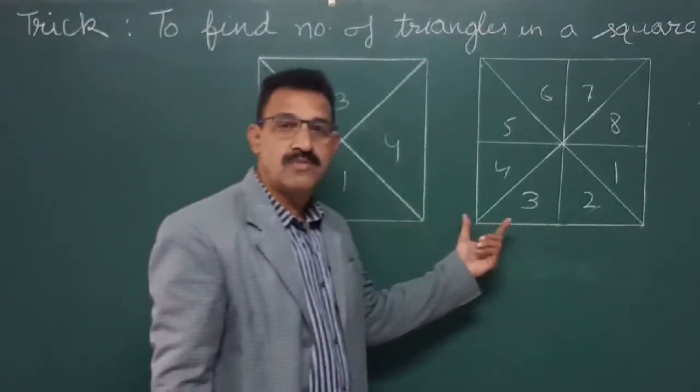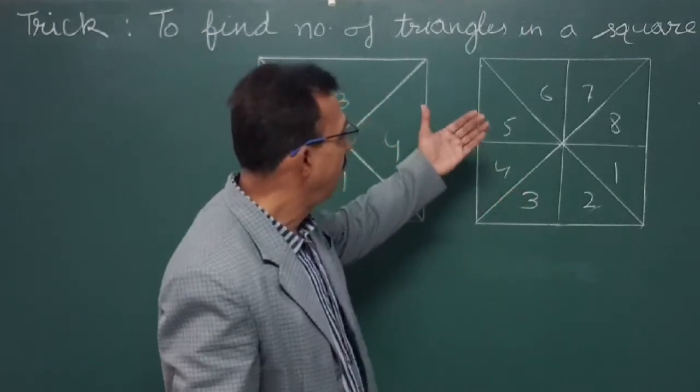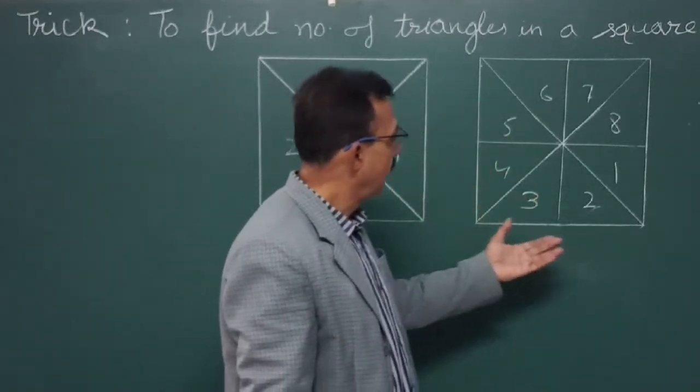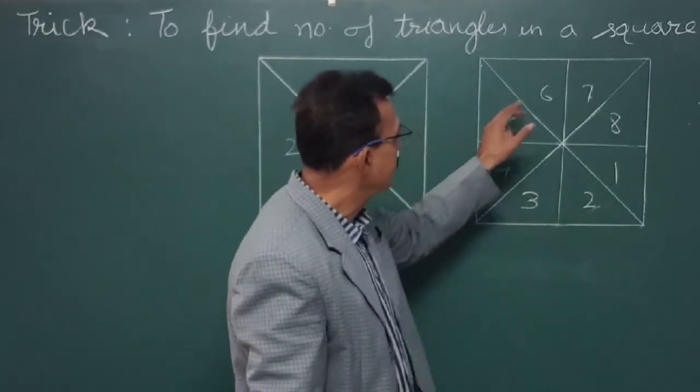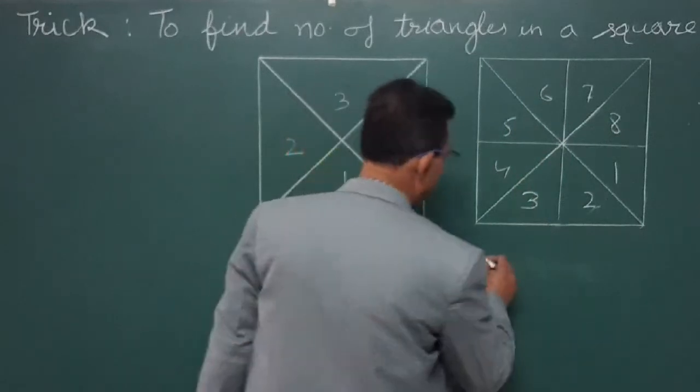Now let's move to figure two. In this figure there are many triangles. One, two, three, four, five, six, seven, eight - eight triangles are there. Simple, eight into two...